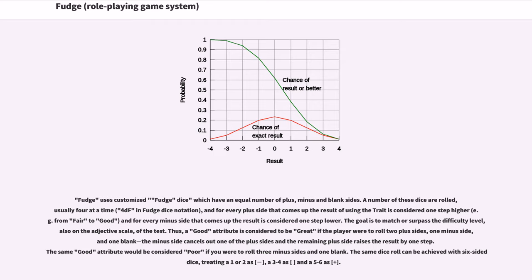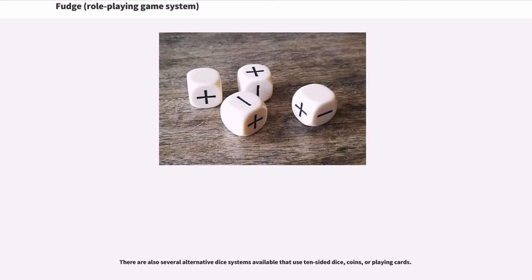The same dice roll can be achieved with six-sided dice, treating a one or two as minus, three to four as blank, and five to six as plus. There are also several alternative dice systems available that use ten-sided dice, coins, or playing cards.